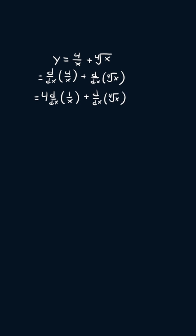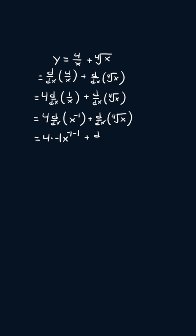Now I'm going to apply the exponent rule, so I get four times the derivative of x to the negative one plus the derivative of the fourth root of x. Now I can apply the power rule, so we're going to get four times negative one x to the power negative one minus one plus the derivative of the fourth root of x.